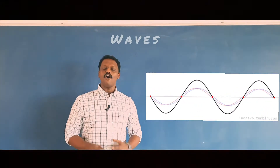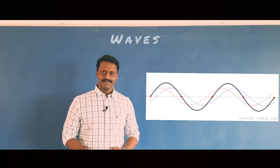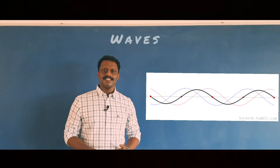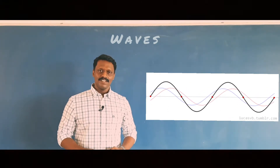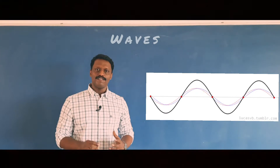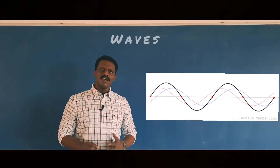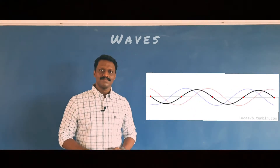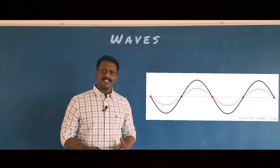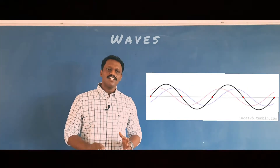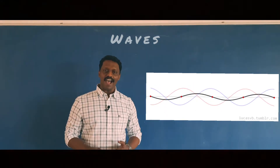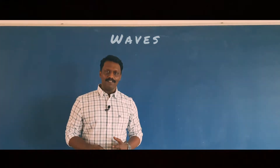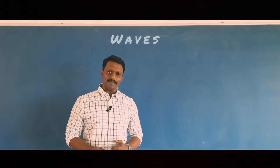In stationary waves, all particles do not vibrate about their mean positions. Some particles remain stationary, forming nodes, whereas all the vibrating particles have different amplitudes but the same frequency. The particles having maximum amplitudes form anti-nodes. In stationary waves, energy is not transferred from one point to another in the medium; this is due to the formation of nodes. Energy gets trapped between segments, that is, between two consecutive nodes. The distance between two consecutive nodes or two consecutive anti-nodes is half the wavelength. A stationary wave is formed when two identical waves with opposite phase travel in opposite directions and superimpose.